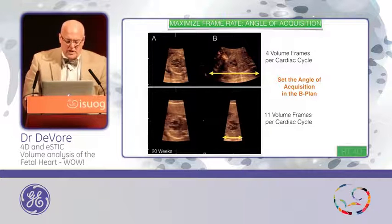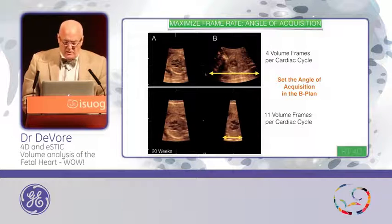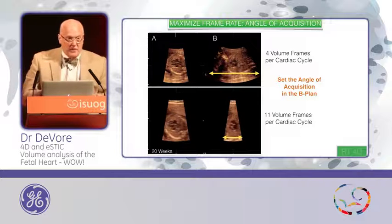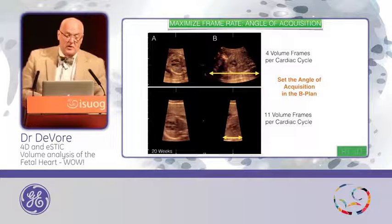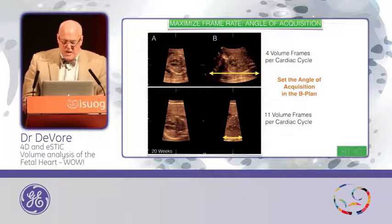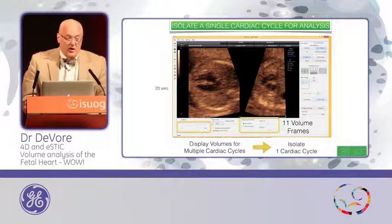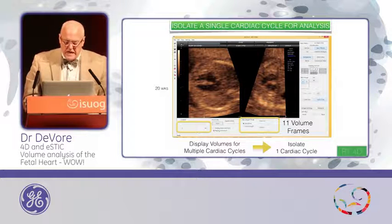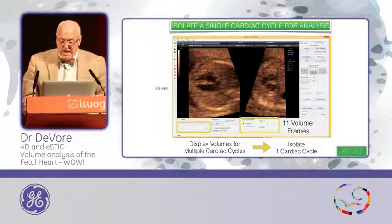If we look at how we improve the frame rate — that's the key element — a large B-angle sweep from the head down through the lower pelvis gives us only 4 volume frames per second, which is too slow for analysis. By narrowing the B window, we can go up to 11 volume frames per cardiac cycle and even higher, depending on the depth of the image and the adipose tissue of the patient. Half of our patients have BMIs over 30, so that presents a problem. Once done, here's a list of all volumes acquired in a two-second sweep, and we can identify the complete single cardiac frame or cycle for analysis.